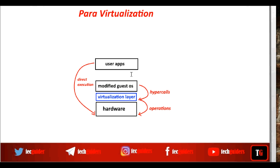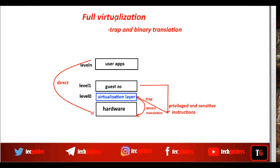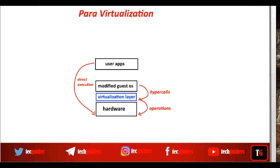In para-virtualization, the OS is trying to communicate with the hypervisor or the virtualization layer. And in full virtualization, the OS is trying to communicate directly with the hardware. In full virtualization, the trap and binary translation approach makes the system slower and leads to lower performance compared to para-virtualization.